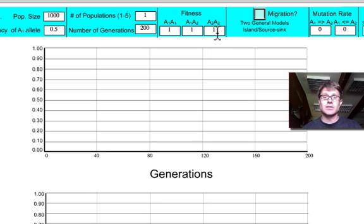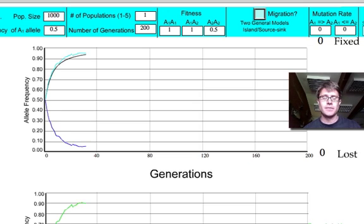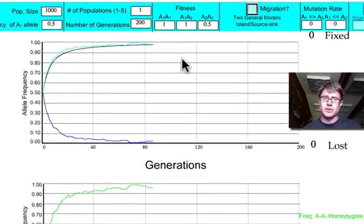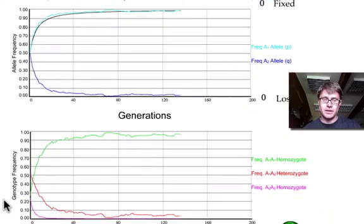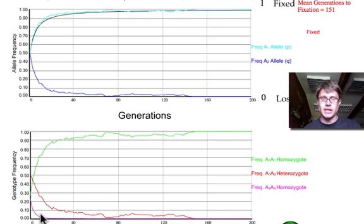Or let's try fitness. So let's say if you're homozygous recessive, let's say you have a 50% chance of survival. So we could do a little bit of selection here and we could run it again. And now we have a P value that's going way up. A Q value that's going down. And we have almost the elimination of that homozygous recessive down here.